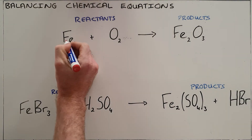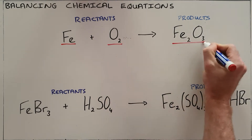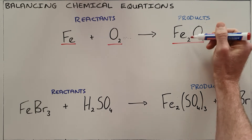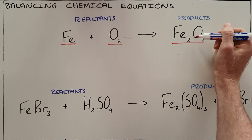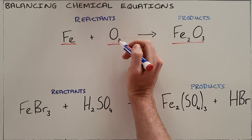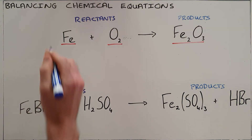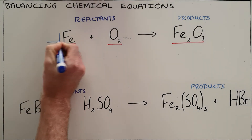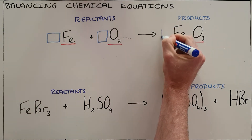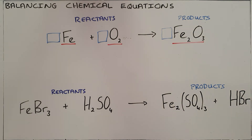We may not change the formula for any element or compound. We cannot change the ratio in which iron and oxygen are combined with each other in this reaction, nor can we change the ratio in which oxygen is combined with itself in this compound. The only thing we can change is the coefficient — the number in front of each element or compound — because that tells us how many of that element or compound need to be present.